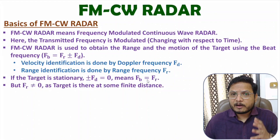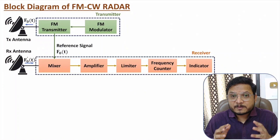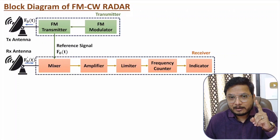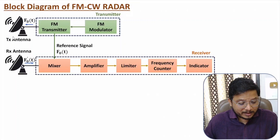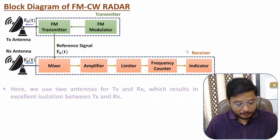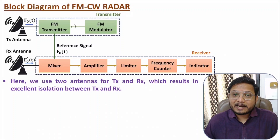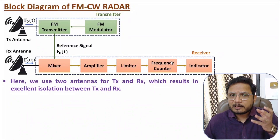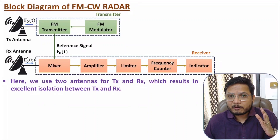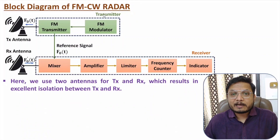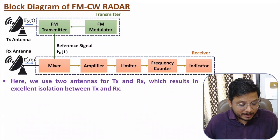Now let us see the block diagram of the FMCW radar system. The block diagram consists of three major elements: first is antenna, second is transmitter, and third is receiver. Here we have two separate antennas — one for the transmitter and one for the receiver. Because of these two separate antennas, we have excellent isolation between the transmitter and receiver sections. The transmitter functions at high power while the receiver functions at low power, since the received echo signal is in the range of 10 to the power minus 12 to 10 to the power minus 15 volts, while the transmitted signal is in the range of a few kilovolts to megavolts.